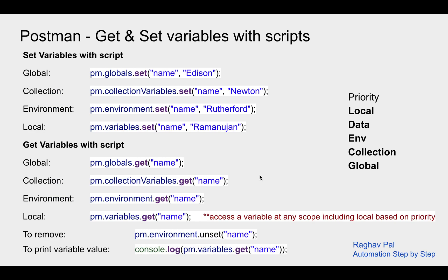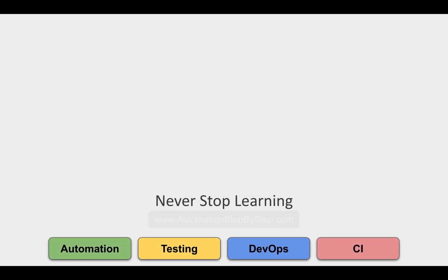To print a variable you can use console.log — to print anything we use console.log statements. This is how we can get and set variables. You can take a screenshot and keep it handy. I hope this was very useful and interesting. I will see you in the next session — thank you for watching, and never stop learning.